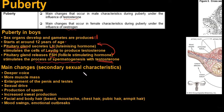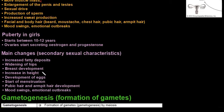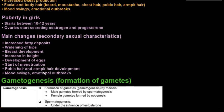The secondary sexual characteristics that develop in boys include: a deeper voice, increased muscle mass, enlargement of the penis and testes, increased sexual drive, production of sperm, increased sweat production, facial and body hair development, and in certain cases mood swings and emotional outbreaks.